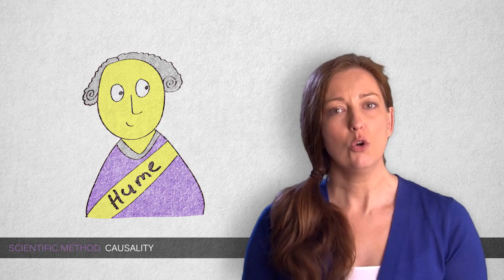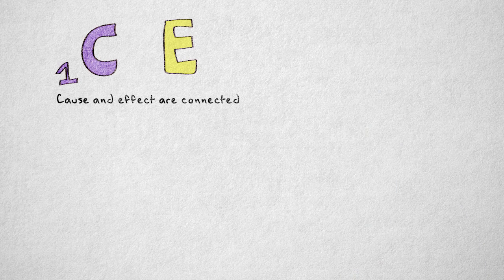Well, it was David Hume, with a little help from John Stuart Mill, who first listed the criteria that we still use today. These are the four essential criteria. Number one, the cause and effect are connected.